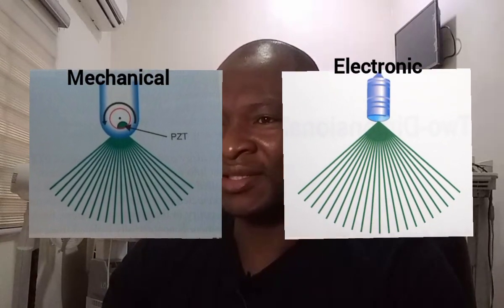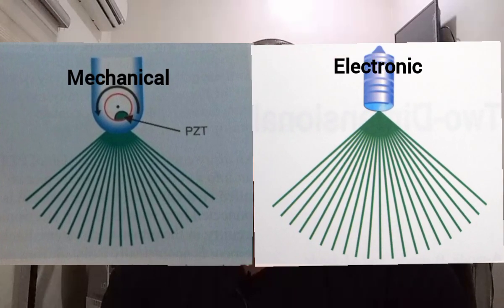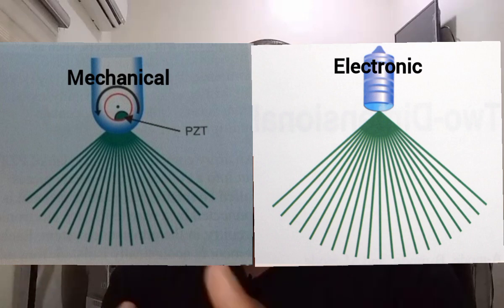Mechanical transducers also create side lobes. This image gives you a sketch of mechanical transducers, some types and their parts, and also that of the electronic transducers.